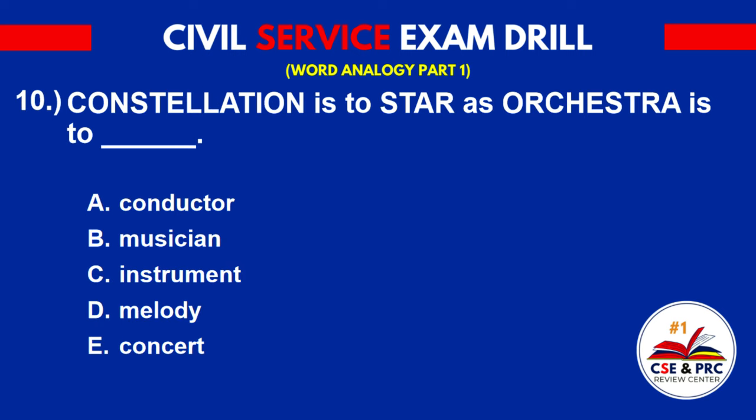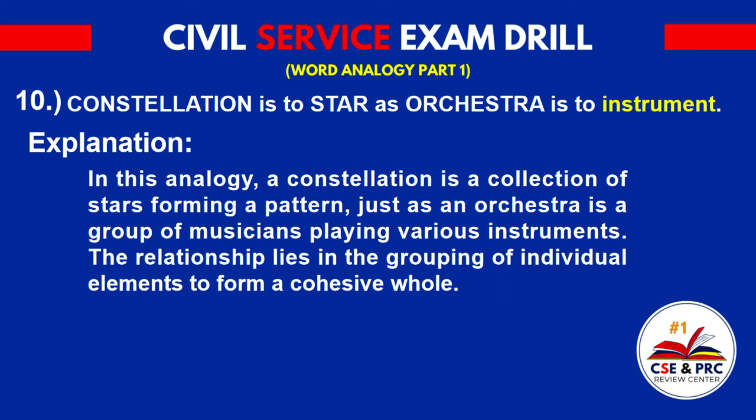Number 10: 'Constellation' is to 'star' as 'orchestra' is to blank. A. Conductor. B. Musician. C. Instrument. D. Melody. E. Concert. The answer is C. Instrument. Explanation: A constellation is a collection of stars forming a pattern, just as an orchestra is a group of musicians playing various instruments. The relationship lies in the grouping of individual elements to form a cohesive whole.